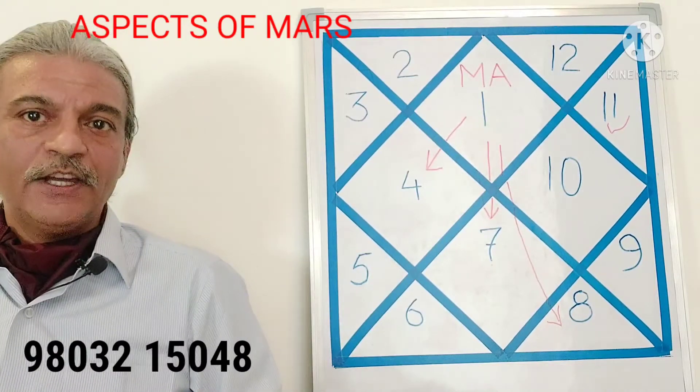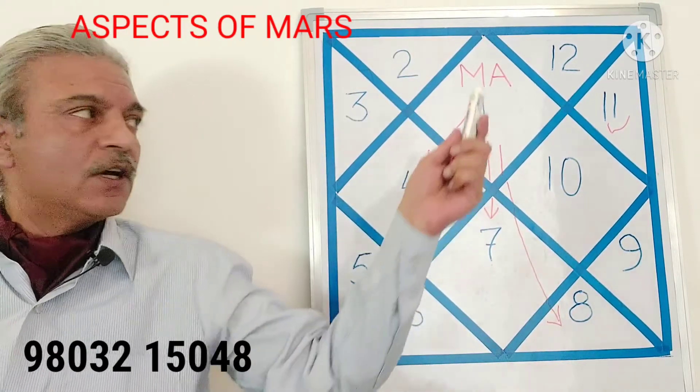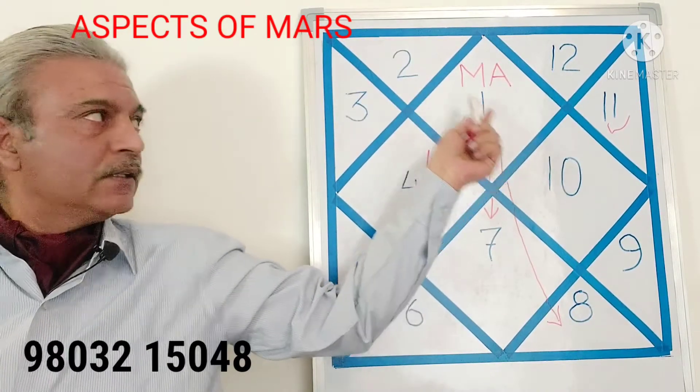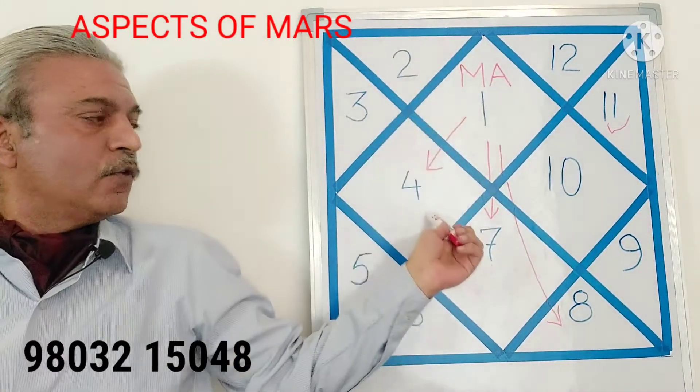So as we see in this board, if Mars is sitting in the first house, then from here, it will aspect the house which is fourth to it, that is one, two, three, four.